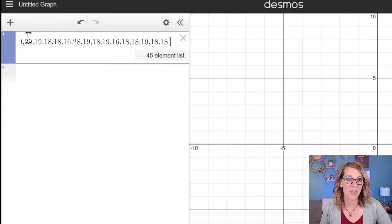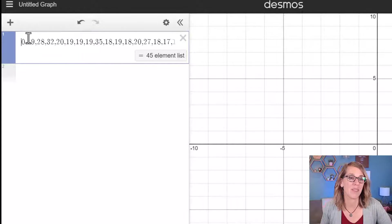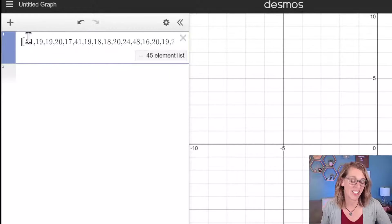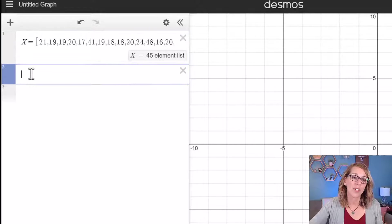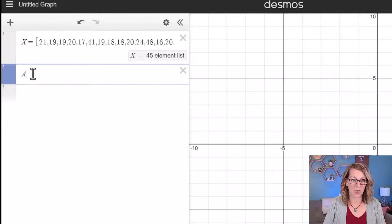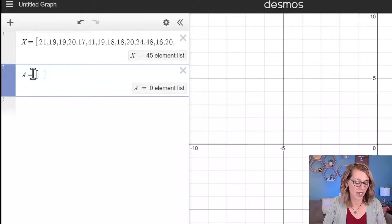I've got this 45 element list. I want to name it though, so I can go to the beginning here and call this capital X equals. You could also put your own list in by doing equals, calling it whatever you want, and then the square bracket, and then go ahead and type some values in.